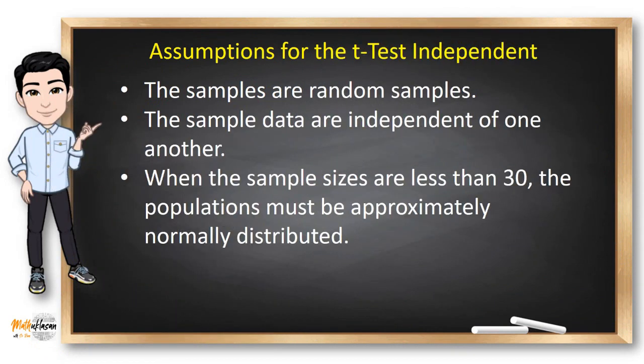Here are the assumptions we need before performing t-test independent: Are your samples randomly selected? Are your samples independent of one another? And if your sample sizes are less than 30, you have to make sure that your chosen variable is coming from a normally distributed data. In our previous example, height is a normally distributed variable.